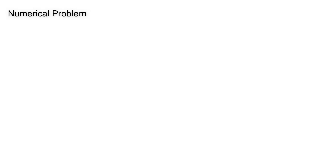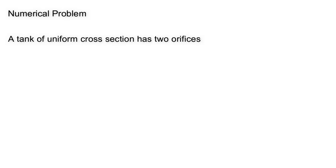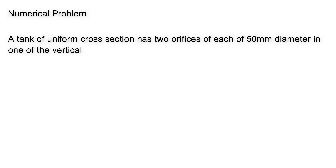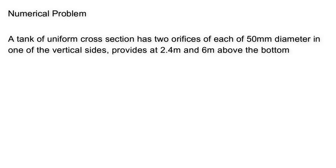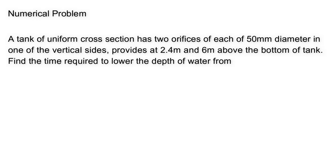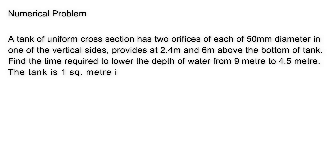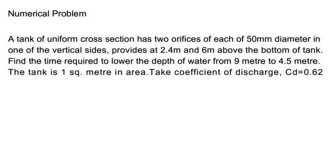Here we are going to do a numerical. First of all, I read the question. A tank of uniform cross section has two orifices, each of 50mm diameter, in one of the vertical sides, provided at 2.4m and 6m above the bottom of the tank. Find the time required to lower the depth of water from 9m to 4.5m. The tank is 1m² in area and coefficient of discharge is 0.62.